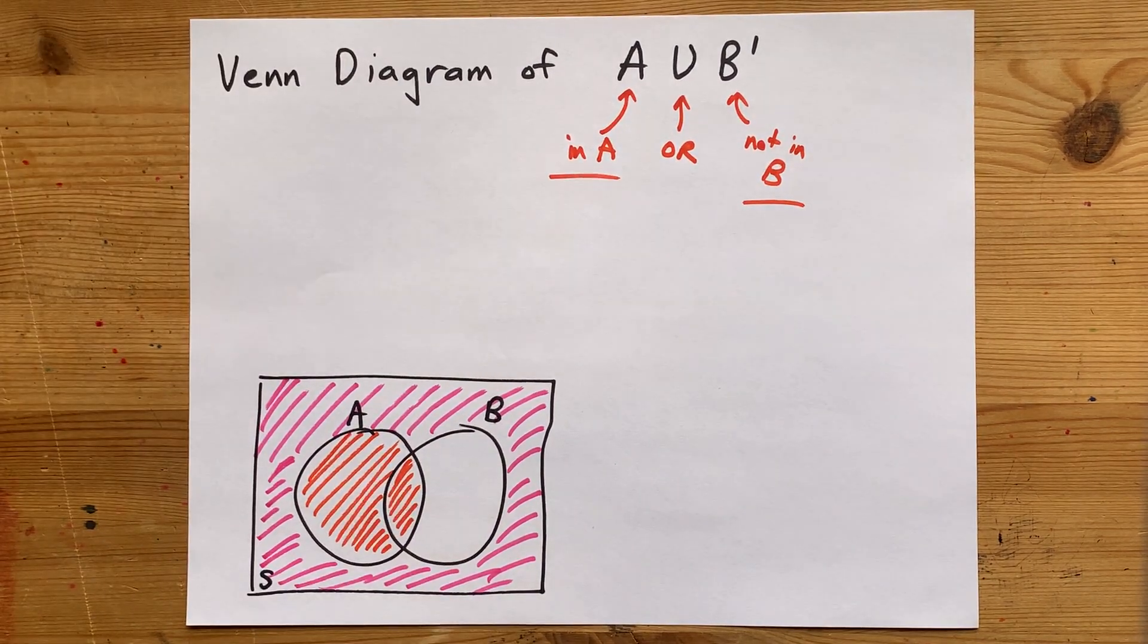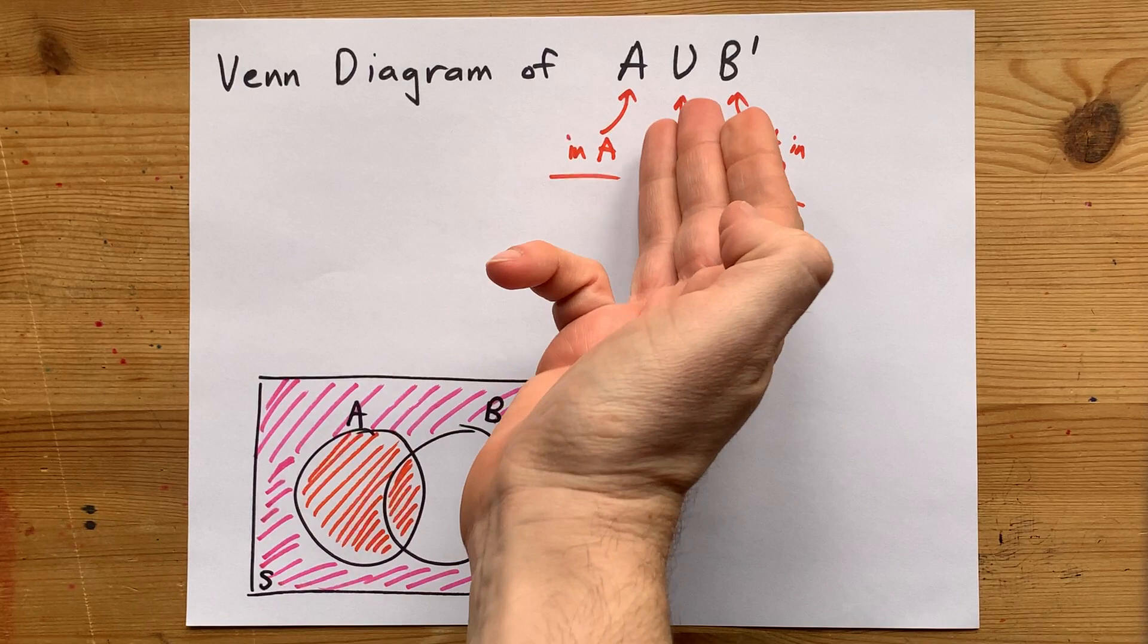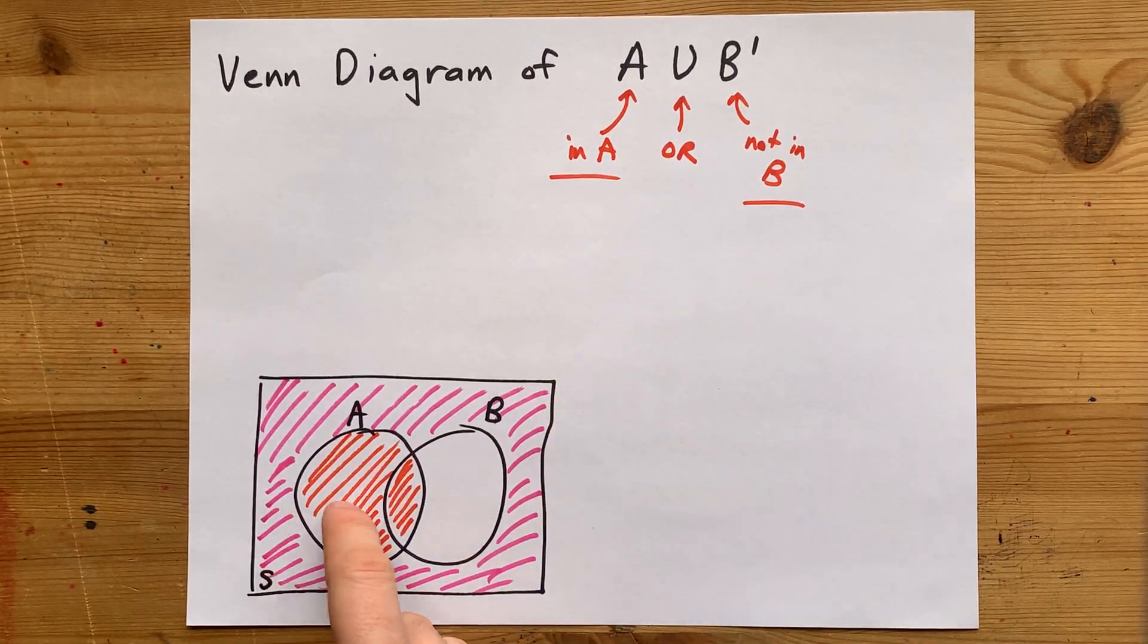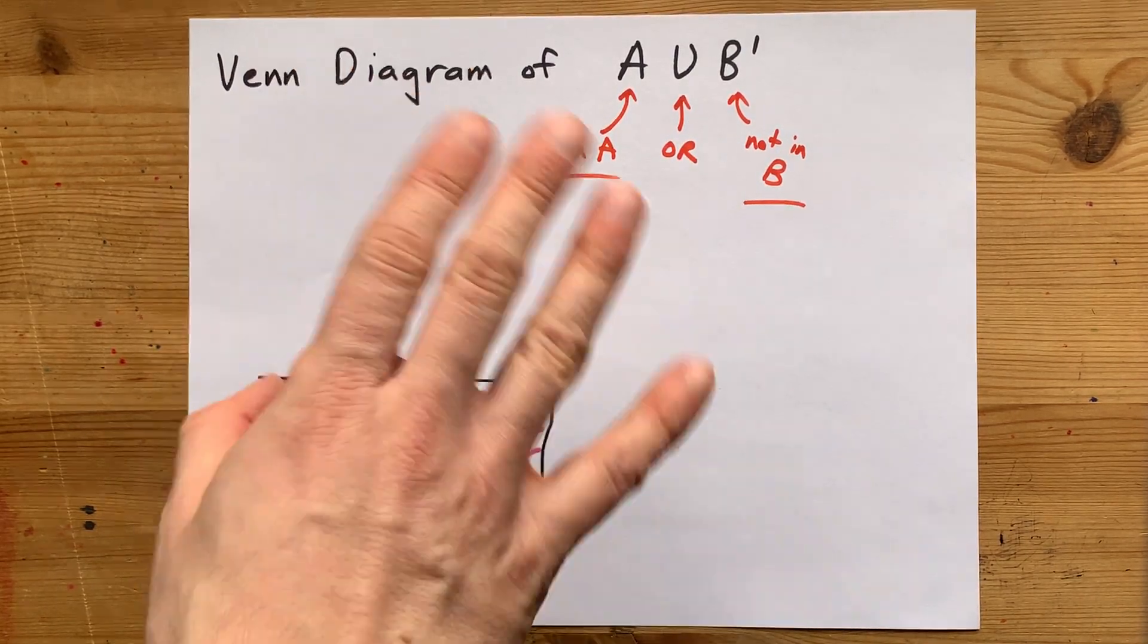There we go. So we now have the Venn diagram for that. We just looked at each section individually to figure out if it applied.